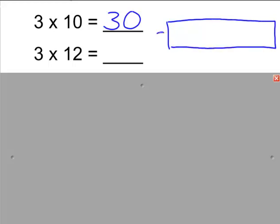Again, I draw the array and label it. But now I'm expecting that someone will give me the strategy that they knew 3 times 10 was 30, and they know that 3 times 2 is 6, and they can use those two ideas to give them the answer of 36.